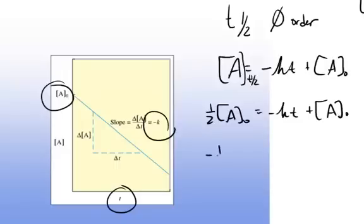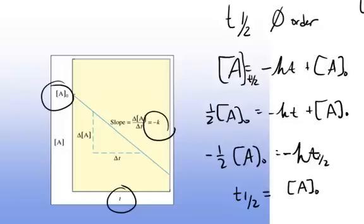And so in this case, the half-life is equal to t₁/₂ is equal to [A]₀ over 2k.